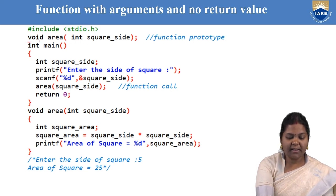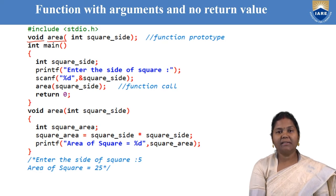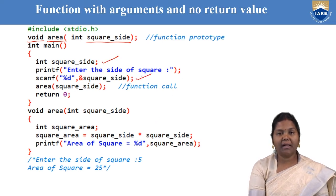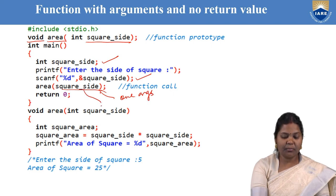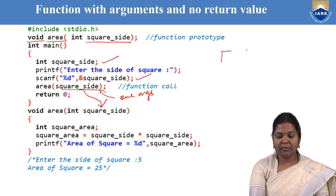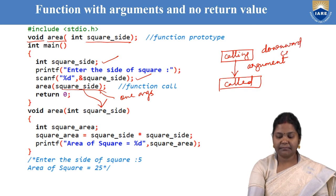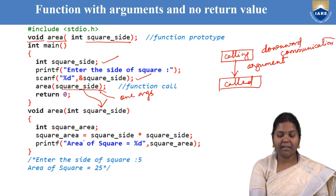Here you can see in the function prototype, area is the name of the function. It returns nothing — void return type — but it is receiving the side of the square as an argument. You declare a variable square_side, read the value of the side of the square, and while calling the function pass it. One argument is passed and this argument is received by the called function. This is your downward communication. After receiving the side of the square it computes the area and displays it within the function itself, without returning any value to the calling function.